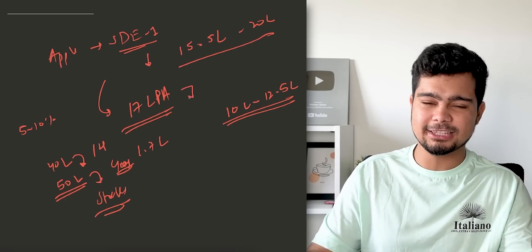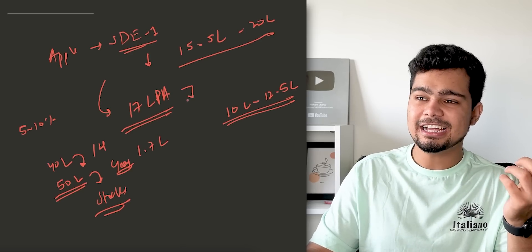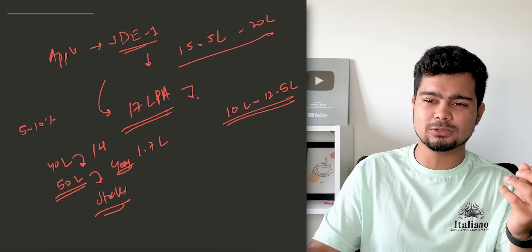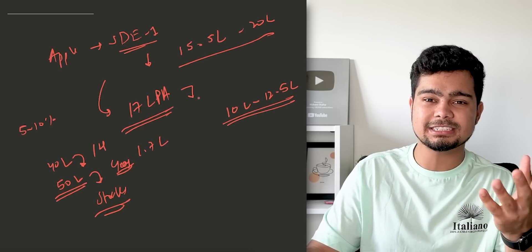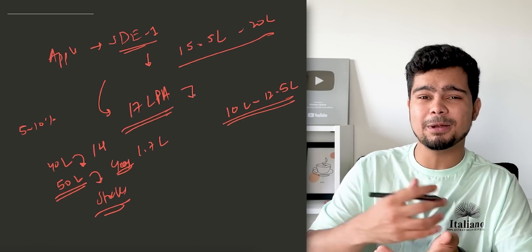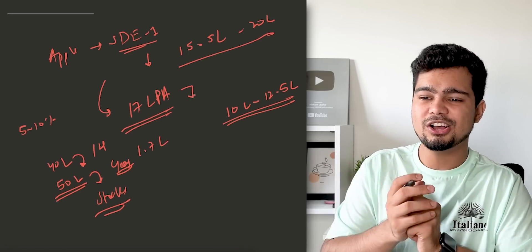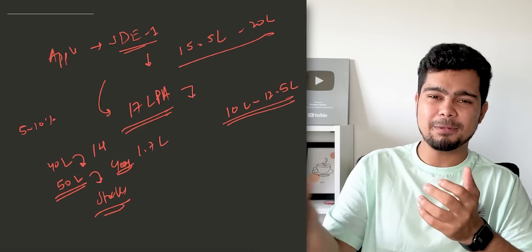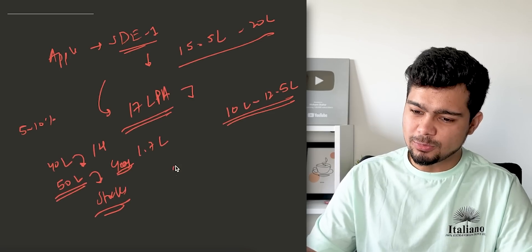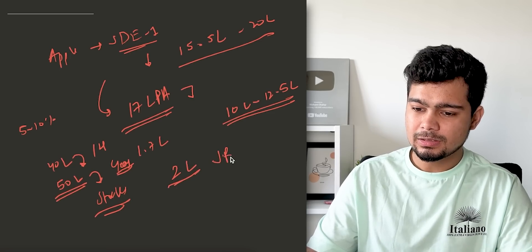You get employee discounts on Apple products — 27% discount on the first product, and around 15–17% on the next 2 to 3 products. Plus you get a budget of around 200–300 dollars which you can use for any Apple product. Additionally, you get a joining bonus of around 2 lakhs.